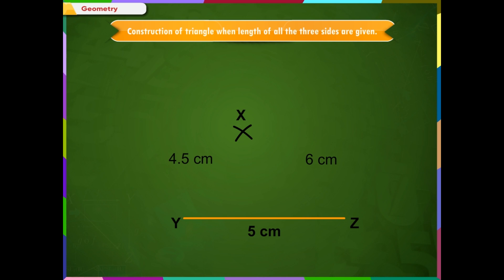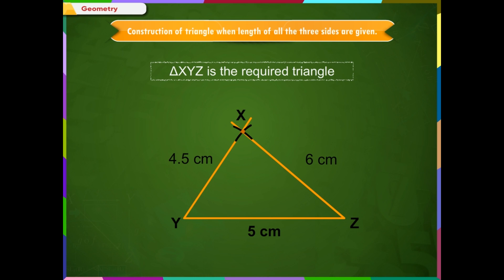Step 4: X has to be on both the arcs drawn, so it is the point of intersection of the arcs. Mark the point of intersection as X. Join XY and XZ. Triangle XYZ is the required triangle as shown in the figure.